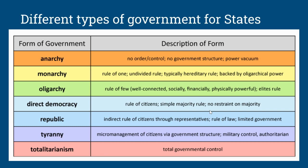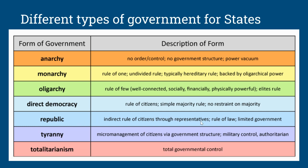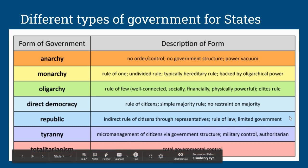A republic is indirect rule of citizens through representatives. This is what we have in the United States — we have a republic. We elect our representatives to go rule in the government for us. We have rule of law and a limited government.